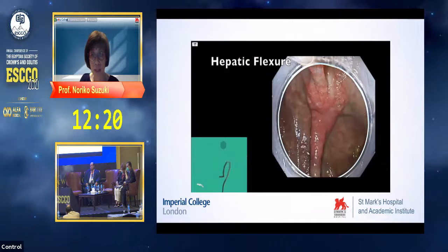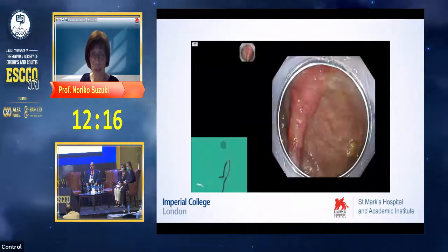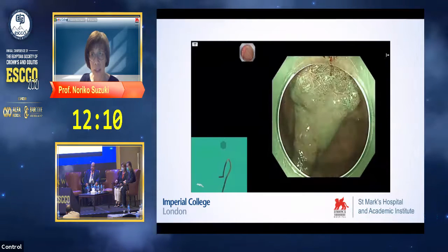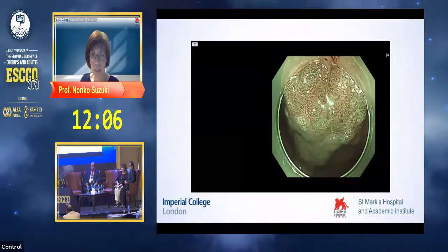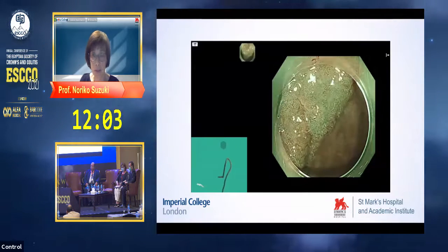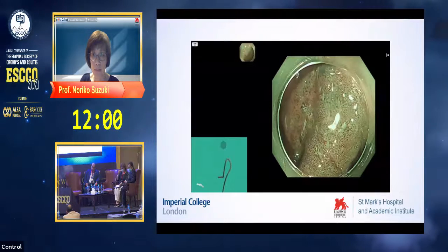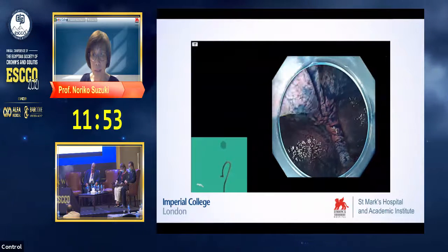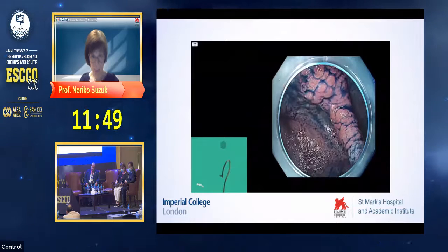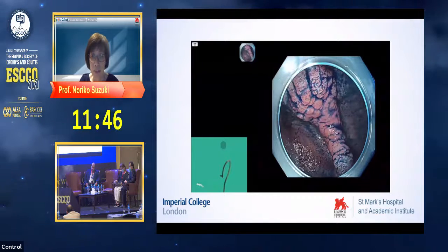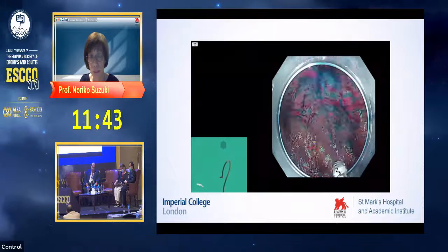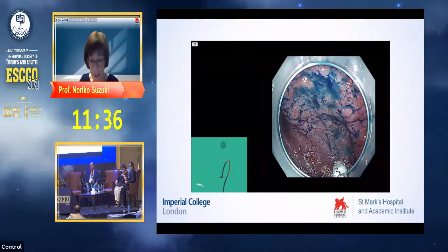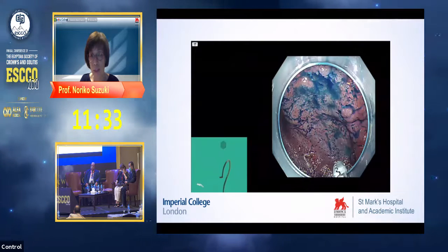This patient also has another region at the hepatic flexure — again, probably a 2A region, a flat elevated region. NBI is applied to assess the surface pattern and vessel patterns in detail. There is no suspected invasive pattern. Trying to delineate the region from the background, this is after spraying of indigo carmine. Focusing on the 10 o'clock or 12 o'clock position, we simply can't draw the line between normal mucosa and lesion. So these regions are out of indication for endoscopic resection.